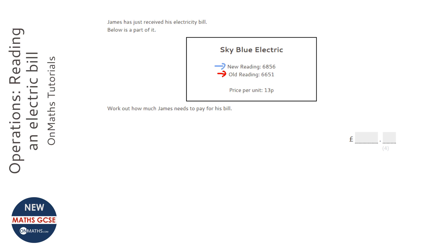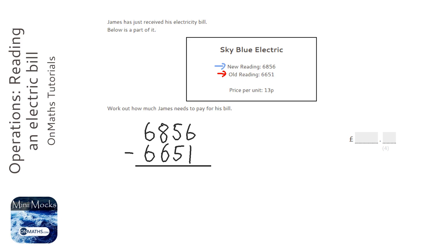To do that we're going to take them away from each other. 6856 minus 6651: 6 take away 1 is 5, 5 take away 5 is 0, 8 take away 6 is 2, 6 take away 6 is 0, so we've got 205 units used.